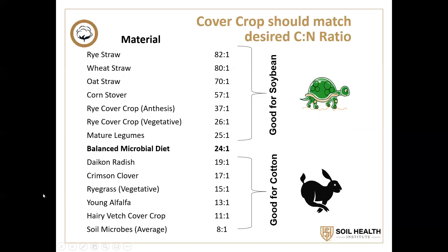On the other side are legumes — they have a low carbon-to-nitrogen ratio, they'll release their nutrients quicker. So if you're going to plant a crop to take advantage of nitrogen and other nutrients, you need to think about that. Soybeans, for example, don't benefit from nitrogen because they produce their own, so following soybeans into a crimson clover cover crop wouldn't necessarily be a good thing — whereas cotton would be a much better choice.